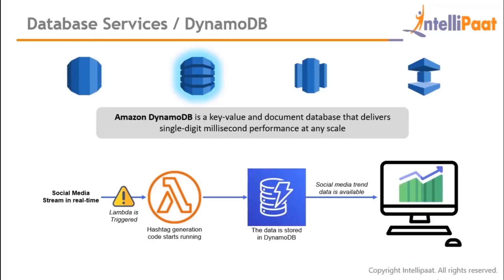Amazon DynamoDB is a key-value and document-based database that delivers single-digit millisecond performance at any scale — meaning very low latency and fast database communication. For example, in a real-time social media stream, a Lambda function generates hashtags; when a hashtag receives many tweets, Lambda is triggered and all the data is stored in DynamoDB, which can later be used to display trending topics. DynamoDB is also used in web, mobile, gaming, and IoT applications.